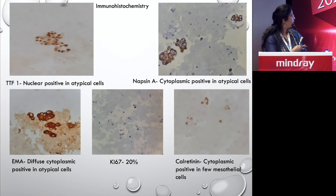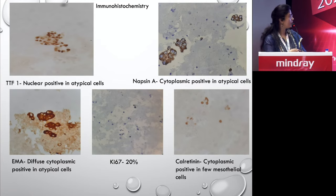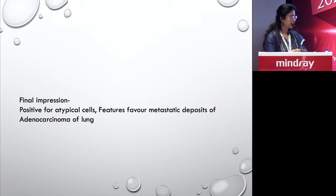IHC showed strong positivity for TTF-1 and Napsin A; EMA was diffusely positive; and calretinin was negative except for highlighting mesothelial cells. The proliferative index was around 20%, confirming this was a malignant effusion of lung primary.